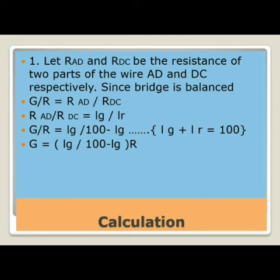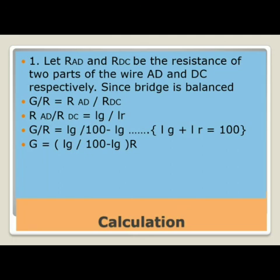Let RAD and RDC be the resistances of the two parts of the wire AD and DC respectively. Since the bridge is balanced, G upon R equals R(AD) divided by R(DC), which equals LG upon LR. Since LG plus LR equals 100, LR equals 100 minus LG. Therefore, the resistance of the galvanometer G equals LG divided by (100 minus LG) multiplied by R.